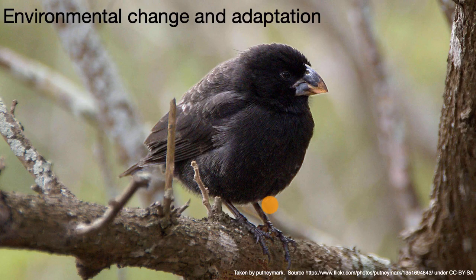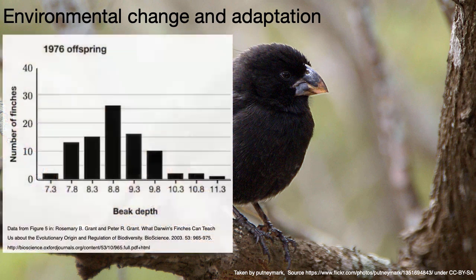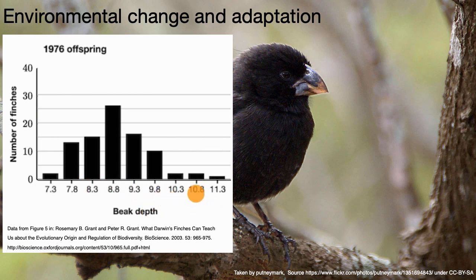This is a picture of the ground finch of the Galapagos Islands. One of its primary sources of food is seeds that it finds on the ground. If we go back to 1976, we can look at the distribution of beak depths — given in millimeters, since finches are quite small birds. In 1976, a large number of finches had a beak depth of 8.8 millimeters, with a distribution around that.